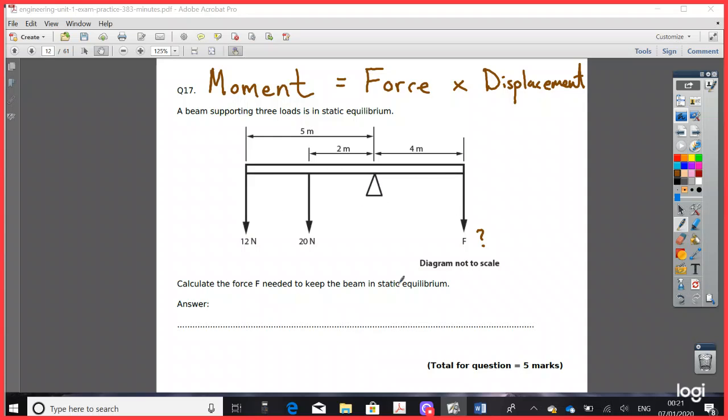That means, if you imagine this seesaw here is in the sky, if this moment is bigger than this one, then this whole seesaw will fall anticlockwise. The only reason why it is not turning is because there is enough force to compensate that. Okay, but you notice that the distances are different for both sides.